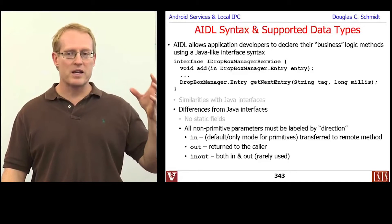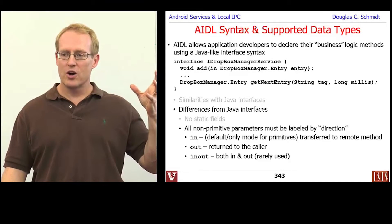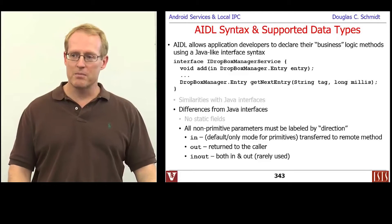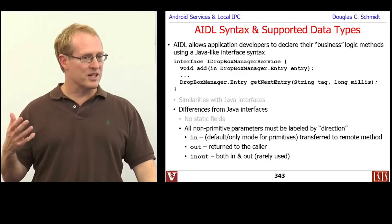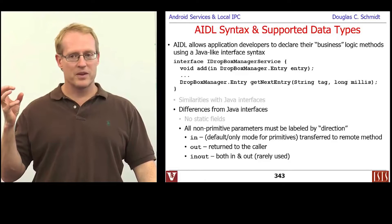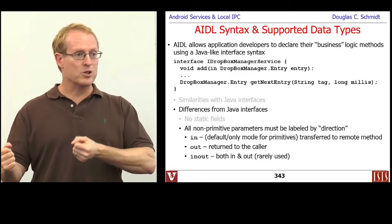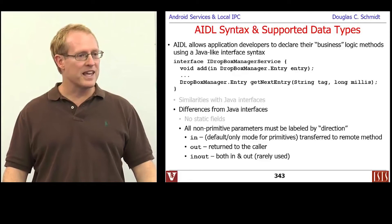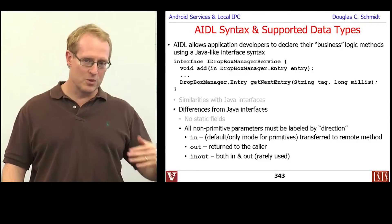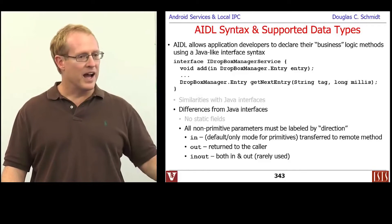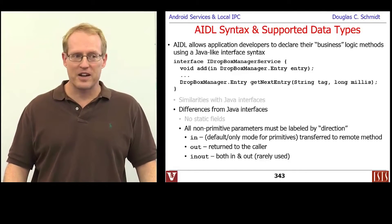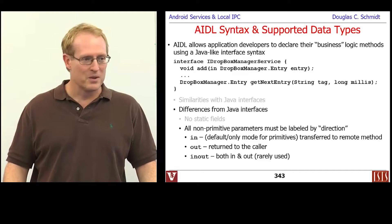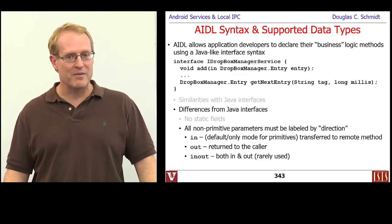'In' means the data will be copied from the caller over to the address space of the receiver. 'Out' means the opposite — data will be copied from the receiver and returned as an out parameter back to the caller. And then 'in-out', which means you pass it in and you get a result back. Looking through all of Android, I could find no examples where anything used the in-out parameter passing mode, so it's not very common.